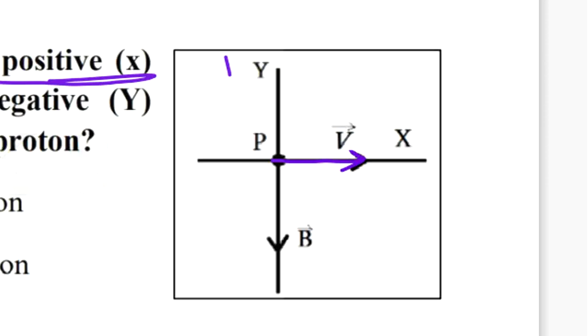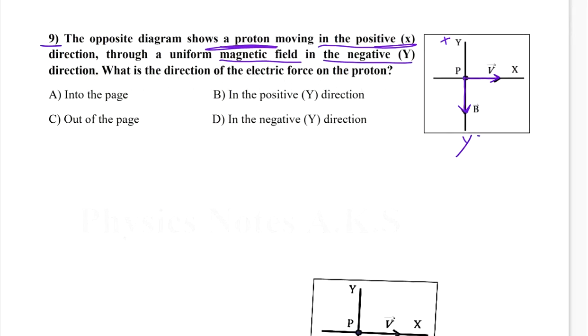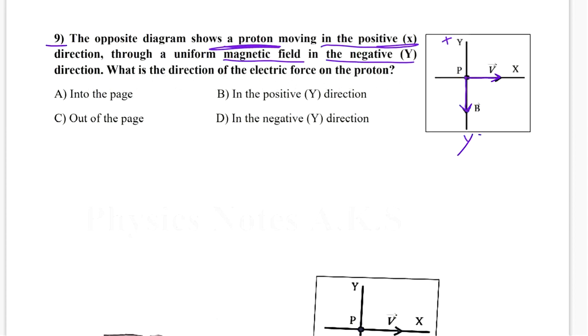Through a uniform magnetic field in the negative y. So the magnetic field B is going in the negative y, because down here I have negative y, and up here I have positive y. Now they say, what is the direction of the electric force on the proton?